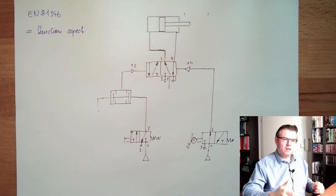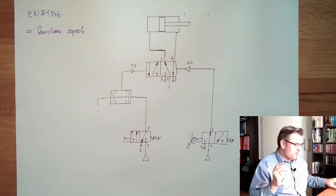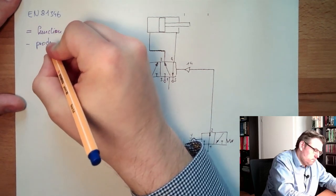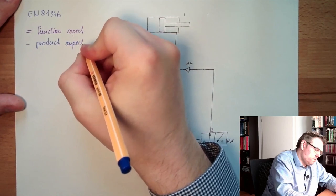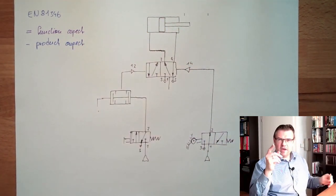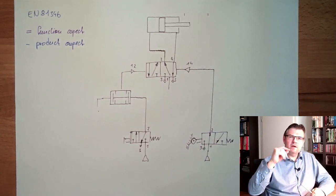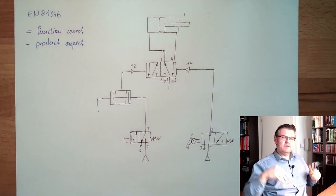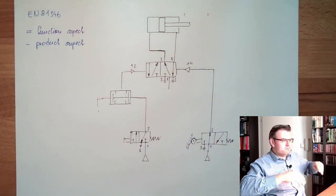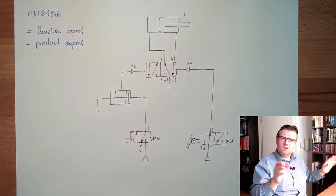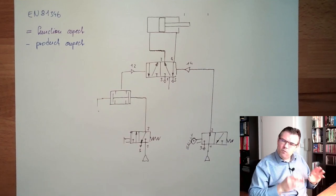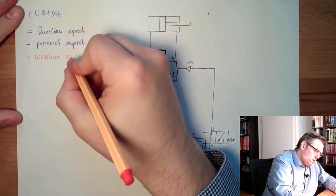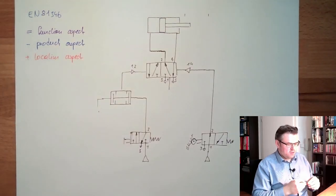Then there is the product aspect, usually started with a minus sign. And then there's also the location aspect. If I want to have coded in my name where this thing is used in my whole system, if there's a big plant, it might be interesting that you know this is a part which belongs to the heating system or the governing system of the turbine or whatever. This is the location aspect, usually started with a plus.